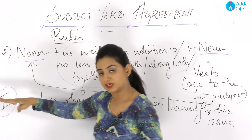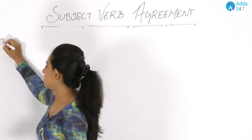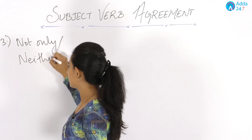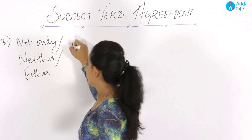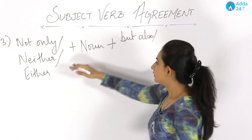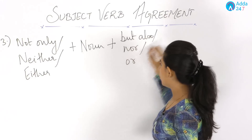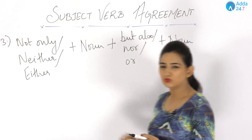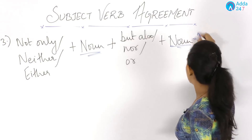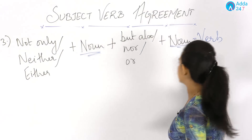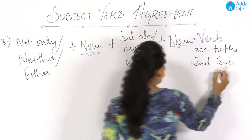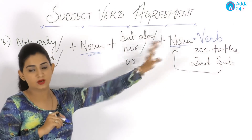The third rule covers correlative conjunctions: 'not only...but also', 'neither...nor', and 'either...or'. When any of these join two subjects or nouns, the verb should agree according to the second subject.